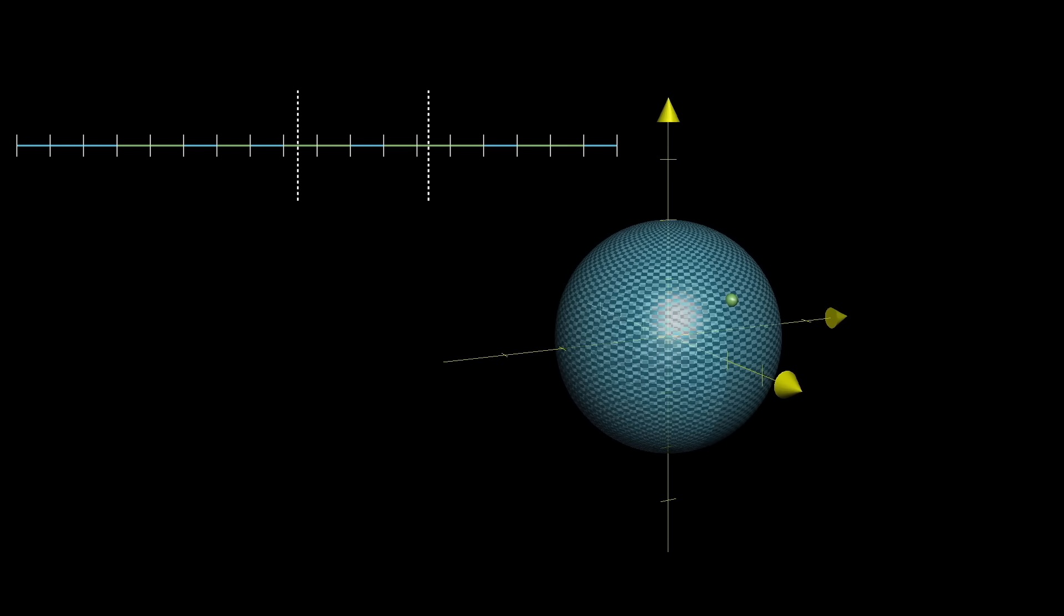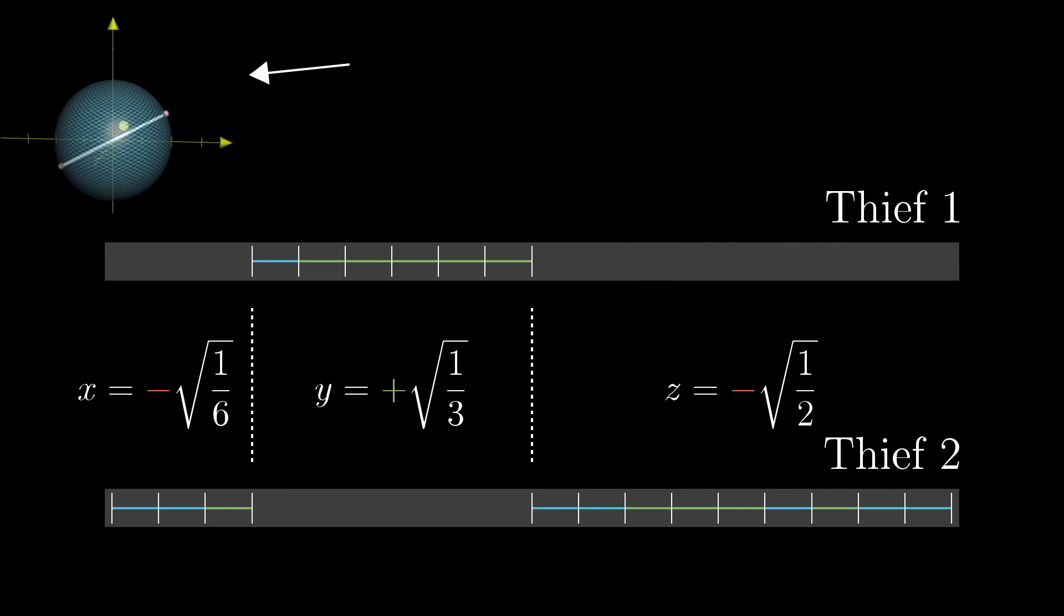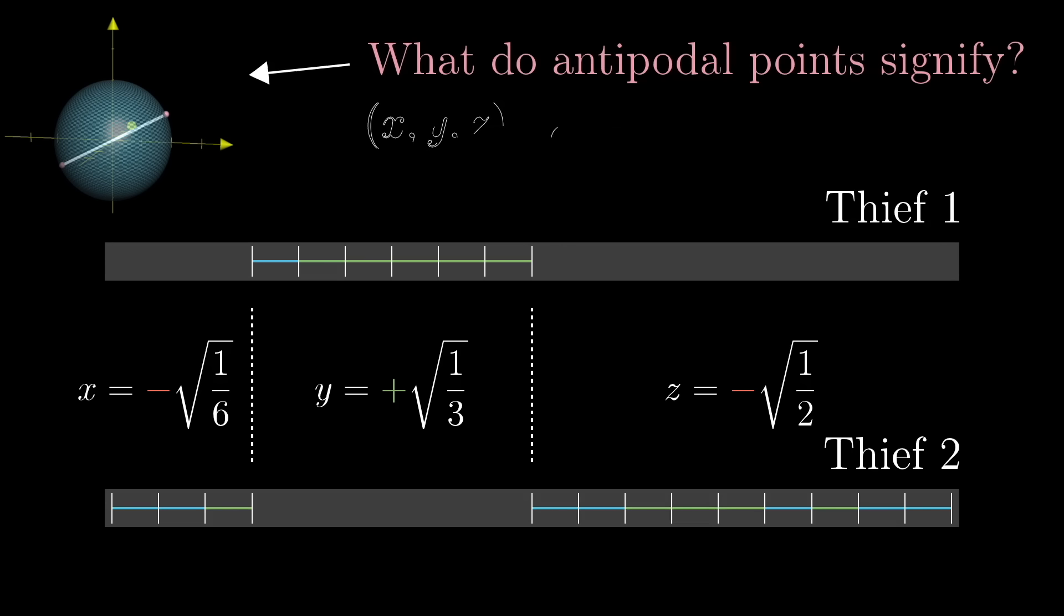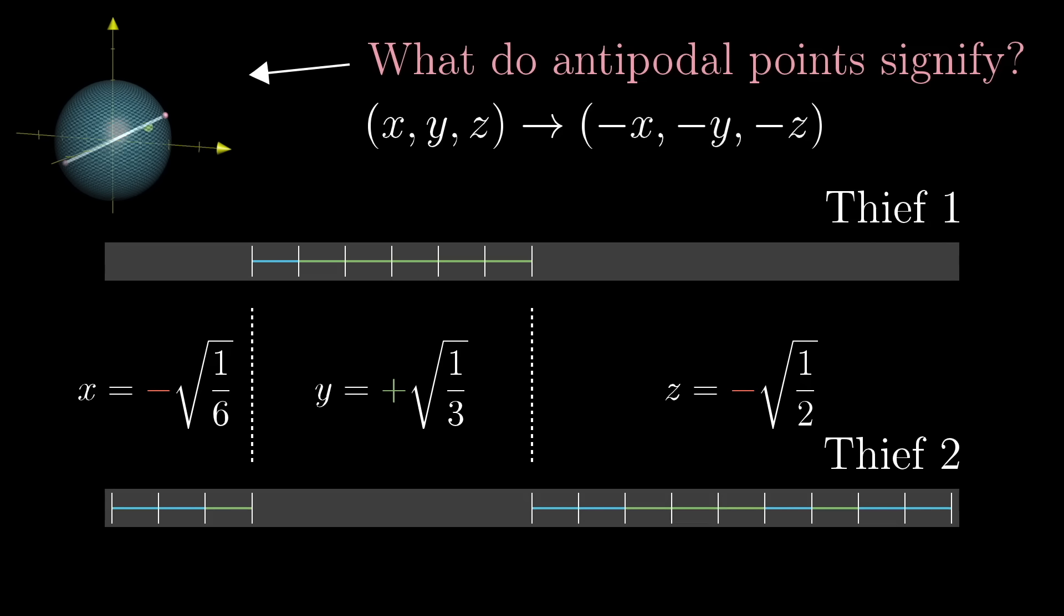And here we are tantalizingly close. Think of the meaning of antipodal points under this association. If the point x, y, z on the sphere corresponds to some necklace allocation, what does the point negative x, negative y, and negative z correspond to?